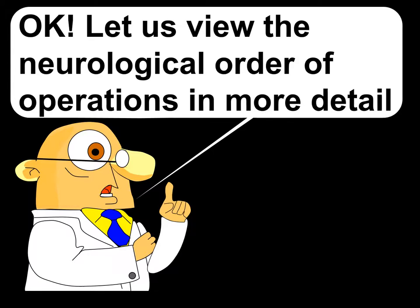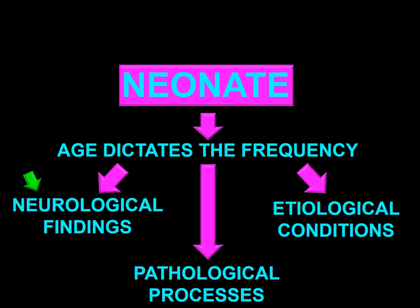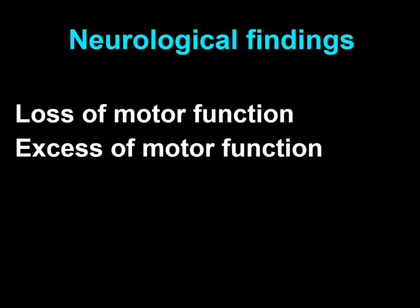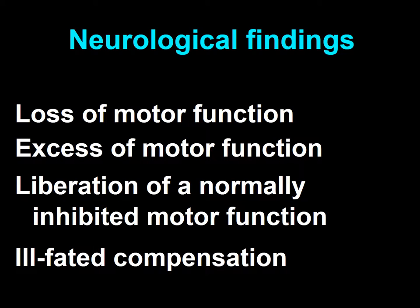The starting point is the neurological finding. The types and frequency of neurological findings encountered during the neonatal period is one of the factors that distinguishes neonates with neurological diseases from older patients. Most neurological findings in neonates are due to a few root causes: loss of a motor function such as arm weakness, an excess in motor function like repetitive jerks, the liberation of normally inhibited motor function such as tonic postures, or consequences of ill-fated compensations like repetitive blinking while sucking a bottle.